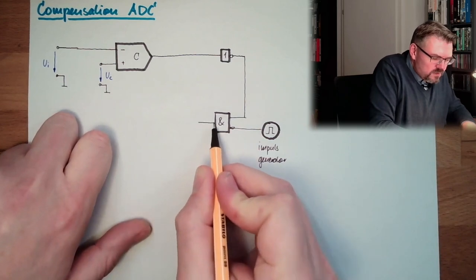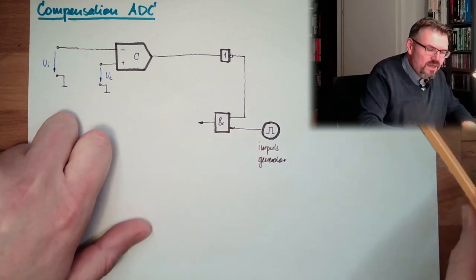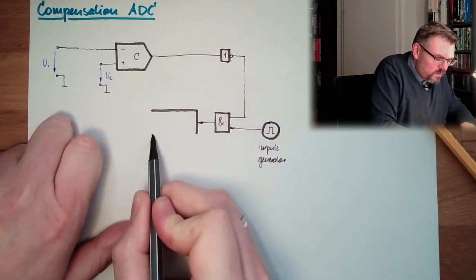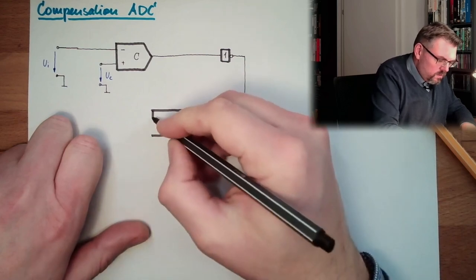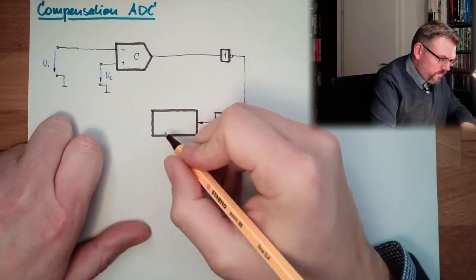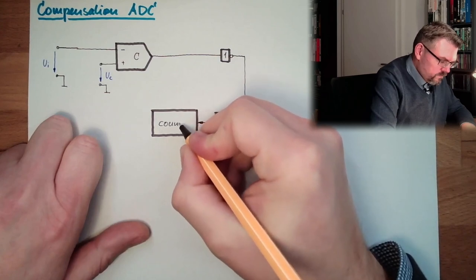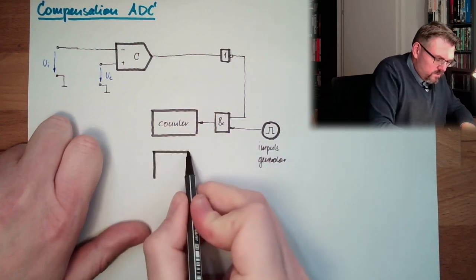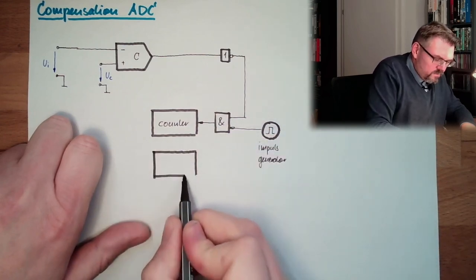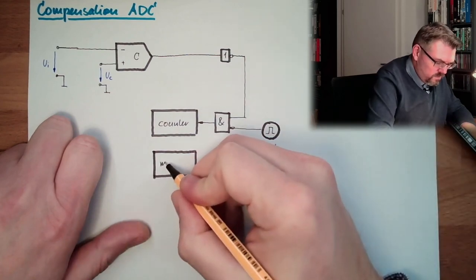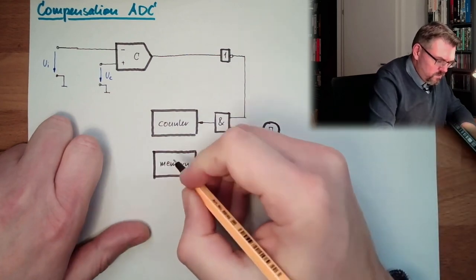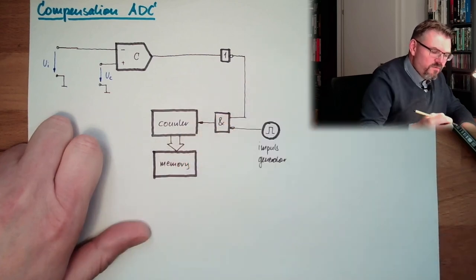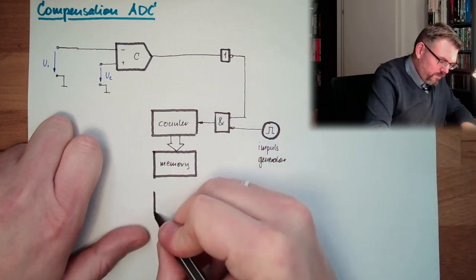So those impulses I will feed again into a counter. So again, we have this block with counter. Then we have a memory somewhere to reflect the last counter value. The counter value will be transferred to the memory again if we are finally done with counting.